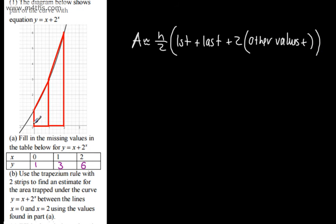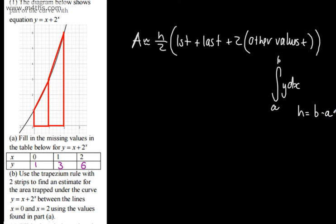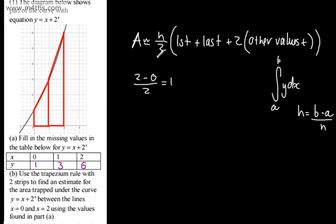h is the width of each strip. More formally, for the integral of y dx from a to b, h equals b minus a over n, where n is the number of strips. Here, h equals 2 minus 0 over 2, which gives 1. So each strip has a width of 1.